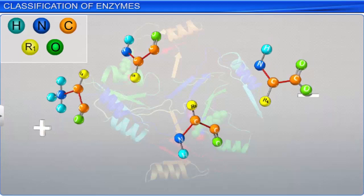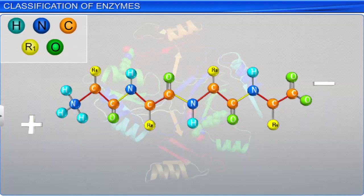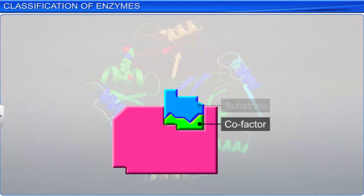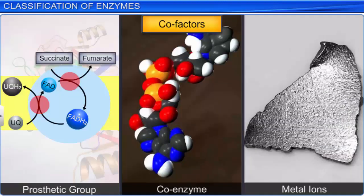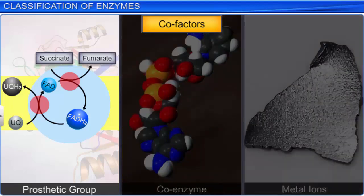As you know, enzymes are three-dimensional protein structures joined by polypeptide chains. However, sometimes, non-protein chemical compounds also bind to the enzyme and make it catalytically active. These chemical compounds are called cofactors, while the protein part of such enzymes is known as apoenzyme. There are three kinds of cofactors: prosthetic groups, coenzymes, and metal ions.